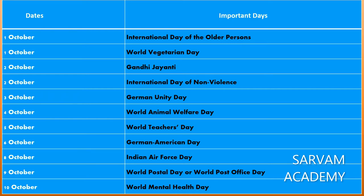October 3 is German Unity Day. October 4 is World Animal Welfare Day. October 5 is World Teachers Day. October 6 is German American Day. October 8 is Indian Air Force Day. October 9 is World Postal Day, also known as World Post Office Day. October 10 is World Mental Health Day.